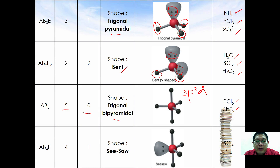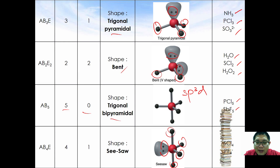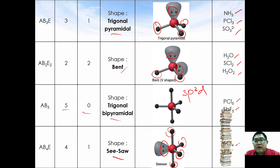If one bond pair is changed to a lone pair electron, so you have four bond pairs and one lone pair, the arrangement is similar to trigonal bipyramidal but the shape is a seesaw. Examples are SCl4 and PF4-.